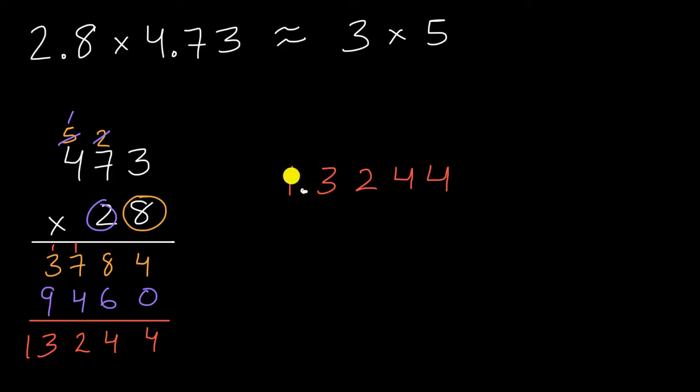So if we want this to be roughly equal to 15, we definitely would want to put the decimal right over there. That is the most reasonable computation we can do, because we know the digits are going to be 1, 3, 2, 4, 4. And this helps us put the decimal.